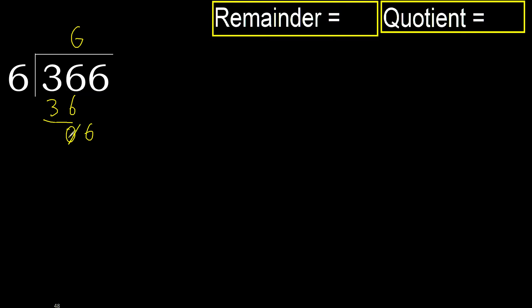Bring down the next digit: 6. 6 multiplied by 1 is 6, which is not greater than 6.